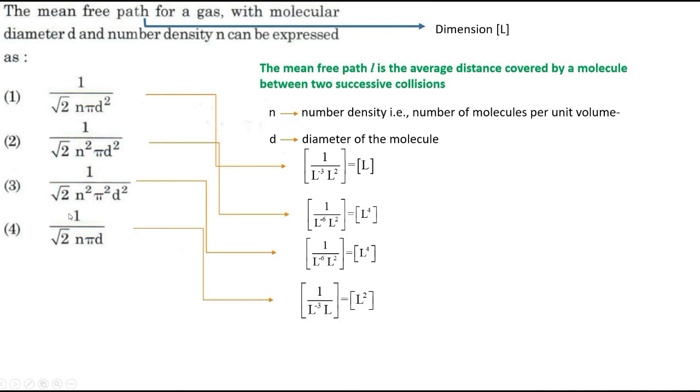Go to the next one. One, no dimension. Root 2, no dimension. N, L power minus 3. Pi, no dimension. D is L. L power minus 2. Take it to the numerator. L square. Dimension.